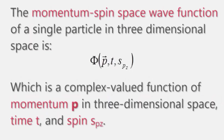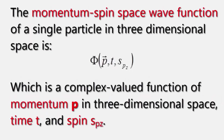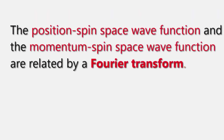The momentum-spin space wave function of a single particle is defined in three-dimensional momentum space, with time t and spin sz. The position-spin space wave function and the momentum-spin space wave function are related by Fourier transform.